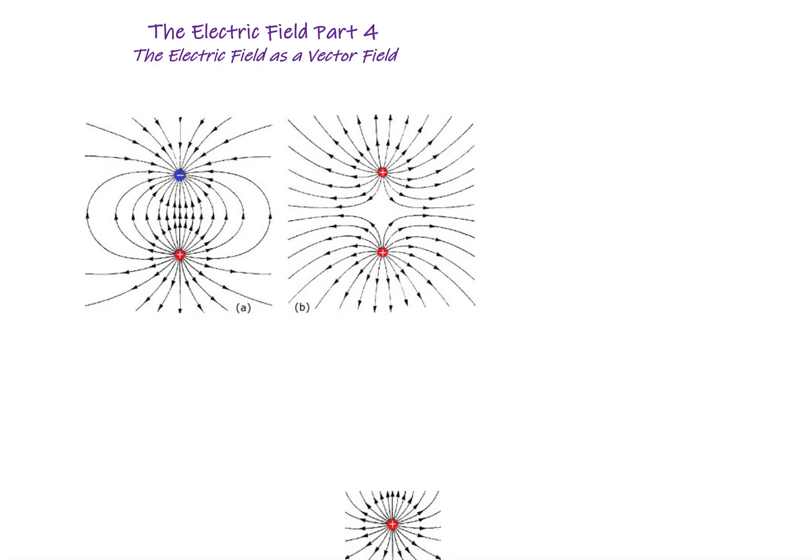At the end of the last video I left you with the challenge where I gave you these two different field maps and I asked you to figure out where was the strongest and the weakest location in these electric fields. Based on the idea that the density of the field lines defines the strength of the electric field, we're going to say that the electric field is strongest over here somewhere in this region and it's weakest somewhere out here where the field lines are less dense.